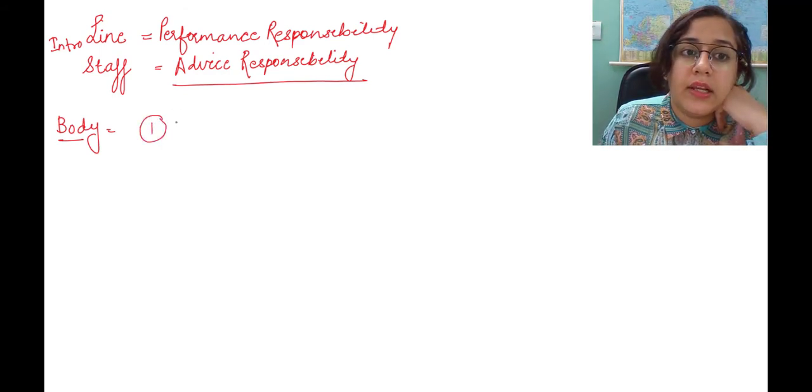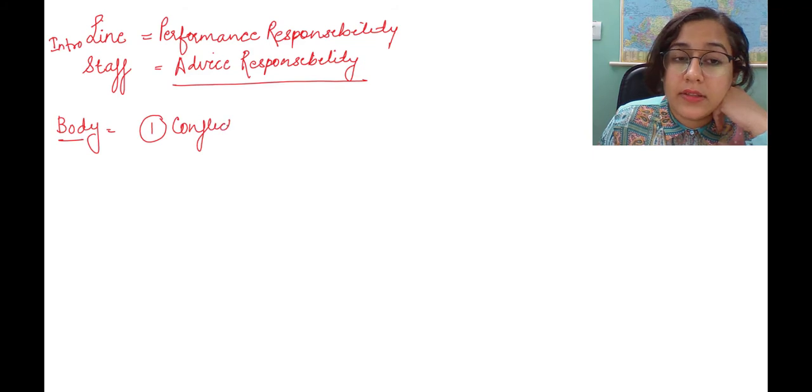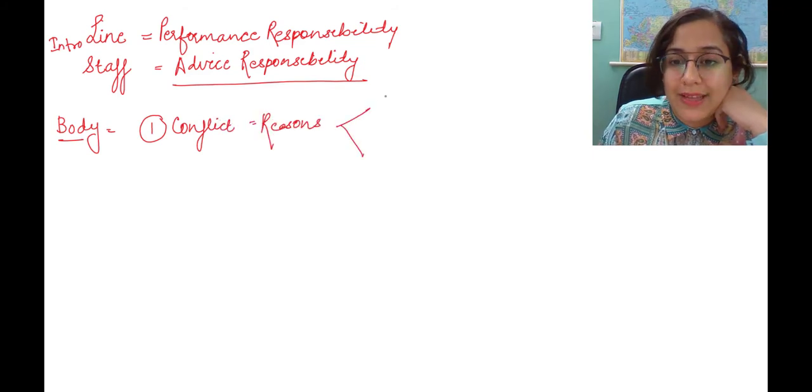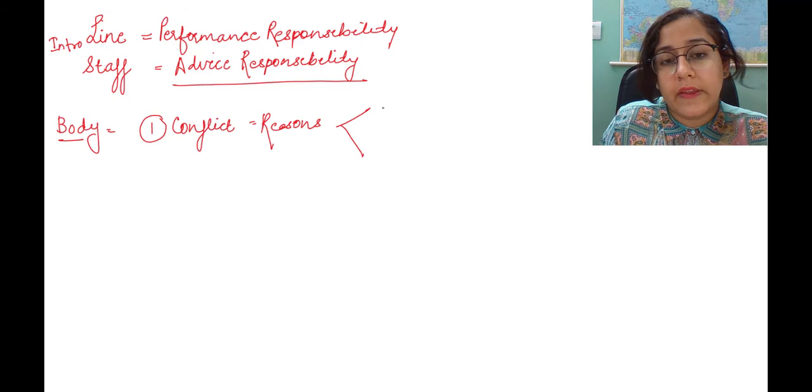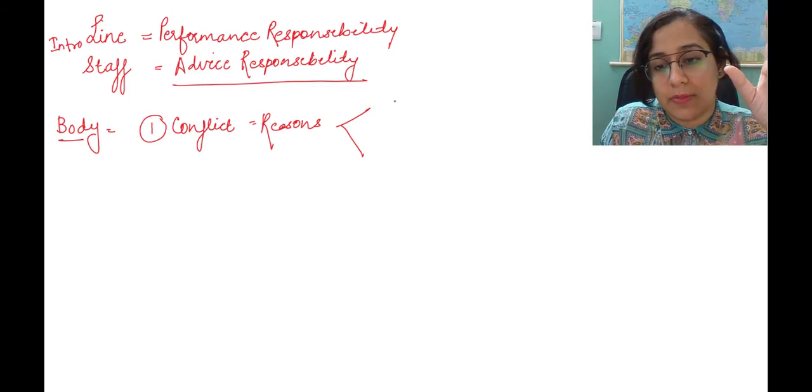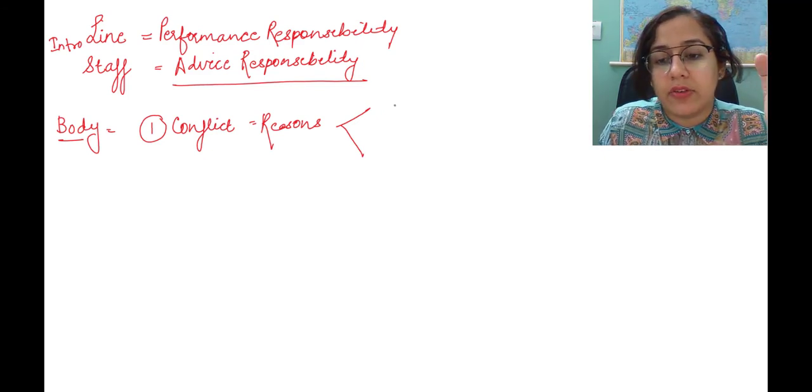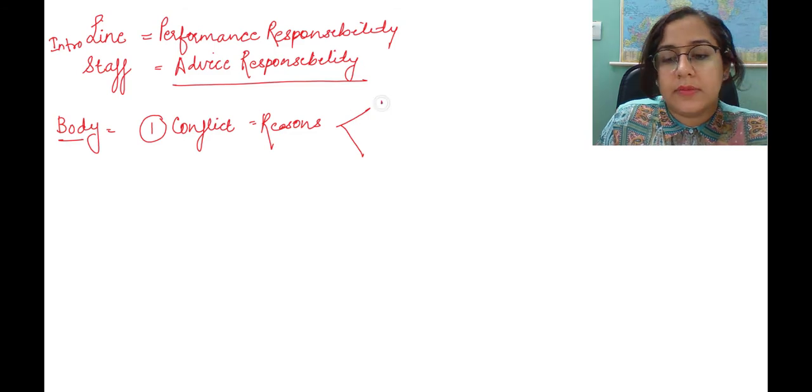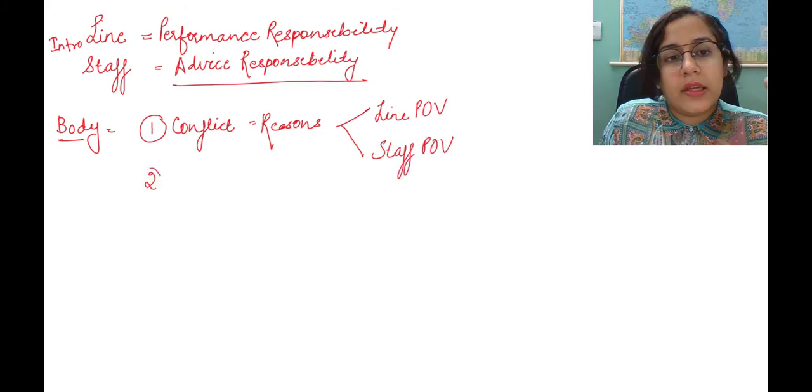Firstly, we will address the conflict and the reasons of the conflict. We will show both the sides of the coin. Therefore, we will say that the line authority has these problems with the staff authority. The staff authority has this problem with the line authority. So we can say that we will write about the line's point of view and then we will write about the staff point of view.